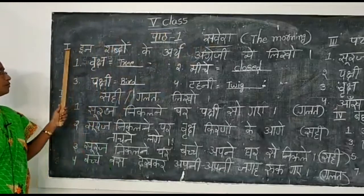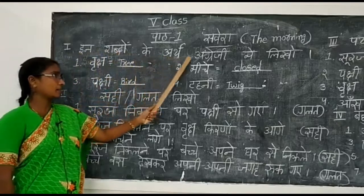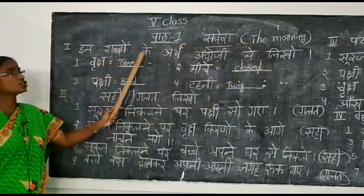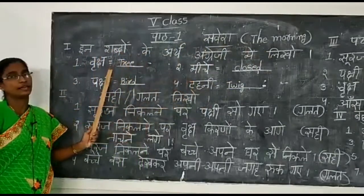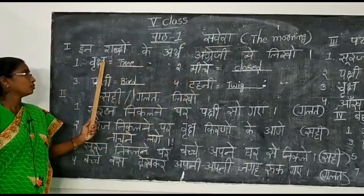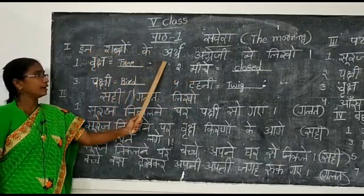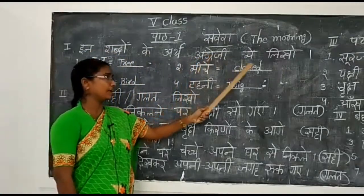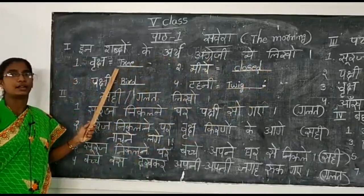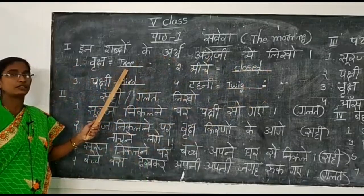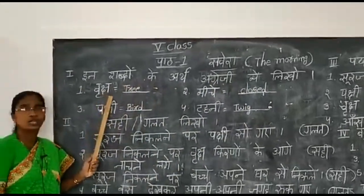First is Roman number one: 'In shabdom ke arth angreji me likho' - meaning write the meanings of the given words in English. Four words are given below. The first word is 'ruksh', meaning tree.